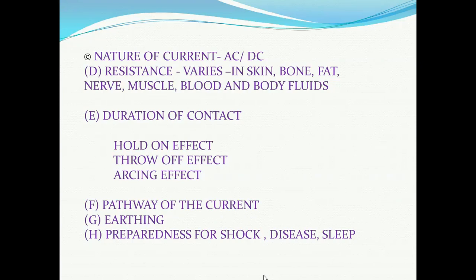The fourth factor is the resistance of the body tissues, which varies from tissue to tissue. Dry skin offers maximum resistance, up to many thousand ohms. But wet skin offers resistance of only about 300 ohms. Similarly, bone shows less resistance than dry skin. Fat, nerve, and muscle also show less resistance. The least resistance is offered by body fluids like blood.